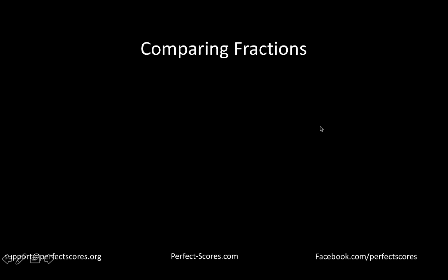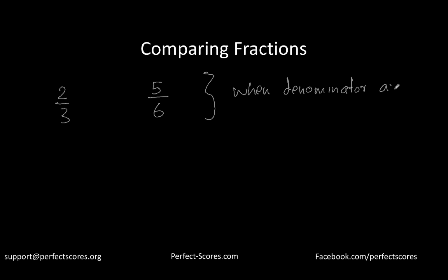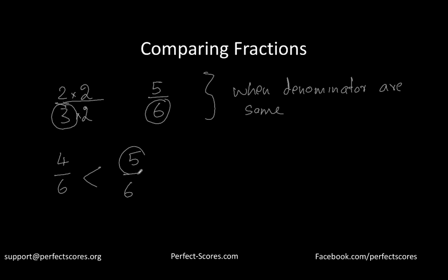Now let's move on to comparing fractions. If I want to compare 2 by 3 and 5 by 6, the only way to compare fractions is when the denominators are the same. The denominator here is 3 and here is 6, so we multiply the numerator and denominator of 2 by 3 by 2 to get 4 by 6. Now comparing 4 by 6 and 5 by 6, we can clearly see that 5 by 6 is greater.